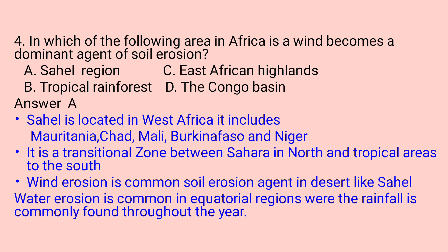The Sahel is located in West Africa and includes Mauritania, Chad, Mali, and Burkina Faso. It is the transitional zone between the Sahara in the north and tropical areas to the south. Wind erosion is commonly found in arid areas like the Sahel, whereas water erosion is common in equatorial regions with year-round rainfall. So the answer is the Sahel region.